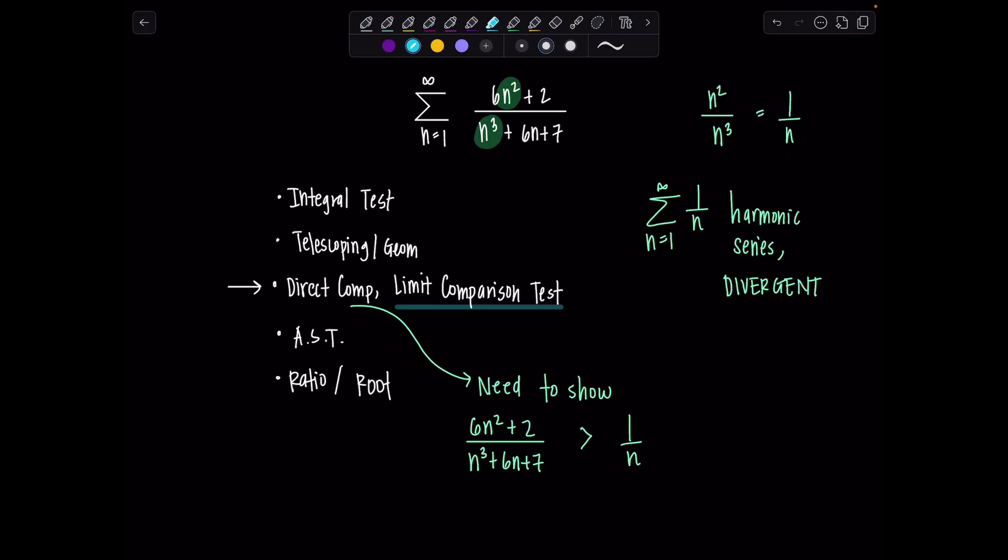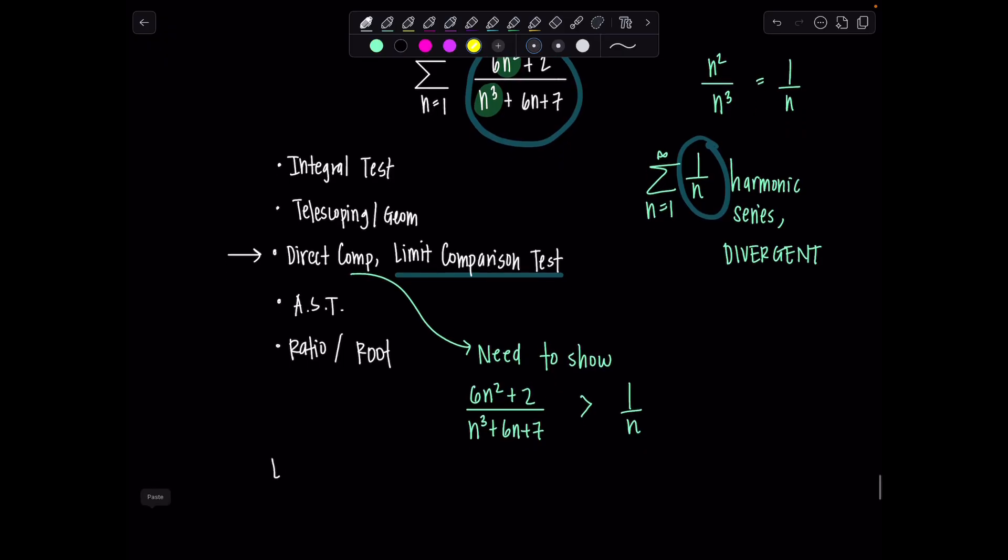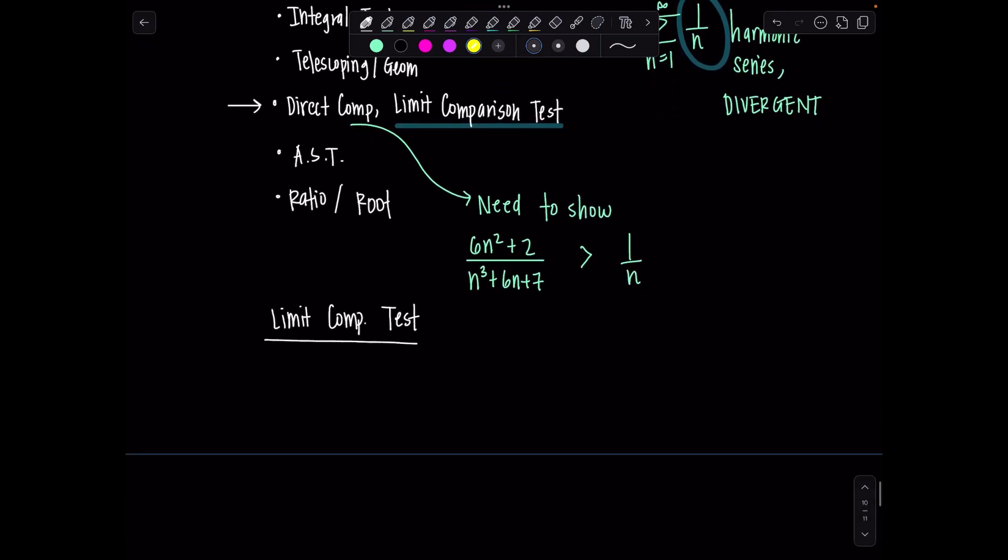So I'm going to take the limit of the ratio of the terms of our series and the terms of the harmonic series. So let's tell the people what's going on. So we're going to use limit comparison test. And do you remember what we need to make sure happens at the end? The limit needs to be finite and non-zero. So we have 6n squared plus 2 over n cubed plus 6n plus 7 and then this is over terms of the harmonic 1 over n.